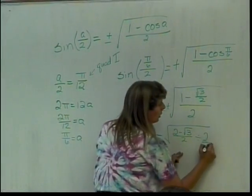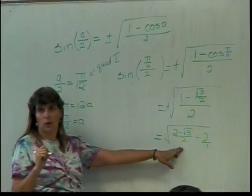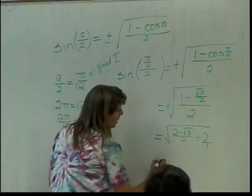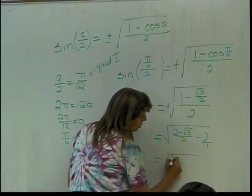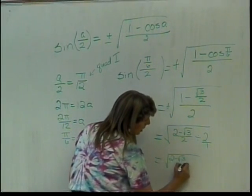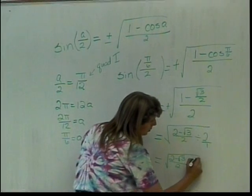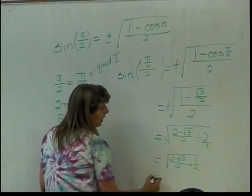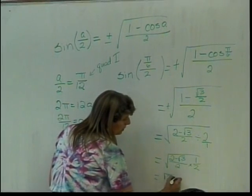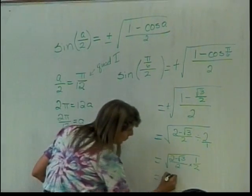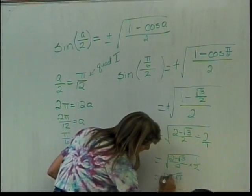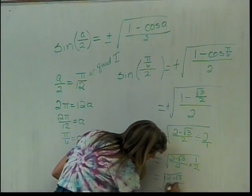When I take a fraction and I divide it by something, what can I do to do that calculation? A fraction divided by a fraction, what do I do with it? Invert and multiply. So this is the square root of 2 minus the square root of 3 over 2 times 1 over 2. Well, if I multiply the numerators, I end up with the square root of 2 minus the square root of 3, all divided by 4.